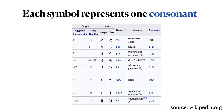Now that we've looked at the Proto-Sinaitic abjad, we can look at the Phoenician abjad. In the first column is the Egyptian hieroglyph, the second column the Proto-Sinaitic symbol, and then the Phoenician symbol. The names of the Phoenician letters are quite similar to the Proto-Sinaitic symbol names: Alep, Bet, Gimel, Dalet — again representing the glottal stop, /b/, /g/, /d/.